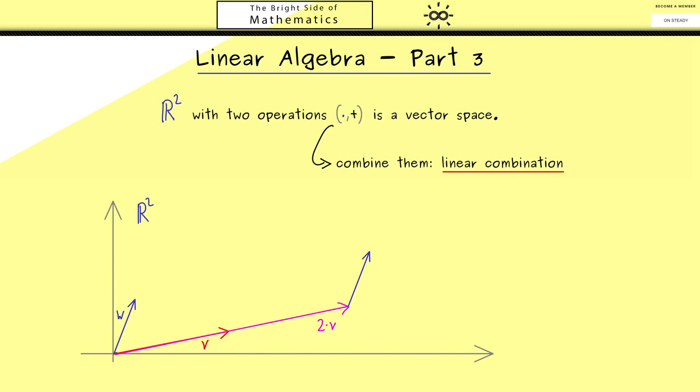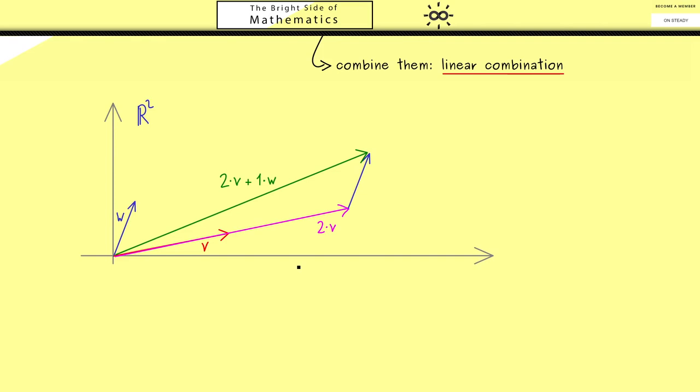What we can also do is use the vector addition and add the vector w to this vector here. So the new vector we get here is 2v + 1w. Indeed such a construction with the scalar multiplication and the vector addition we call a linear combination.